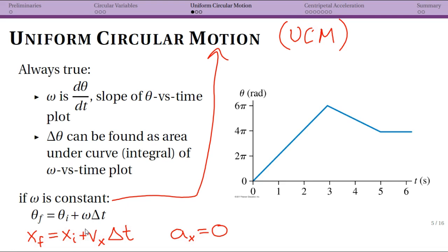You can identify uniform circular motion if your angular velocity is constant or from a graph like this. This is analogous to uniform motion in linear one-dimensional situations.